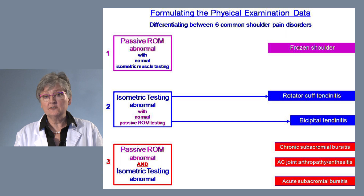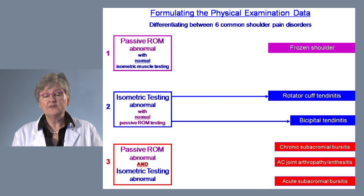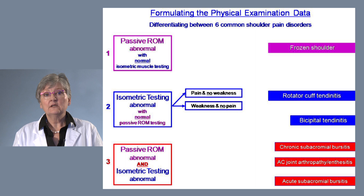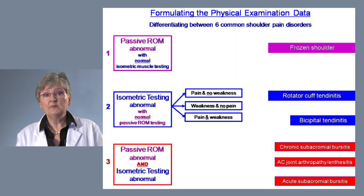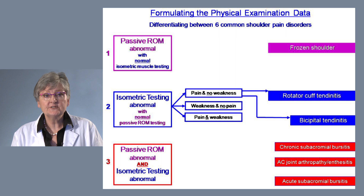When isometric muscle testing is abnormal, as with rotator cuff tendinitis and bicipital tendinitis, there are three groups. Testing the muscle strength isometrically, there can be pain and no weakness, weakness and no pain, or pain and weakness. For both rotator cuff tendinitis and bicipital tendinitis, the finding is pain and no weakness.